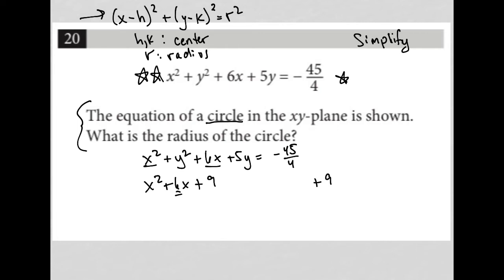And I do the same thing with my y values, so I have y² + 5y. Half of 5 is 5/2. I'm not going to go to decimal here because I see this as a fraction. 5/2 squared is 5² which is 25 and 2² which is 4, so (5/2)² = 25/4.